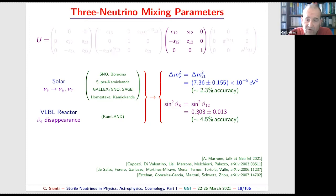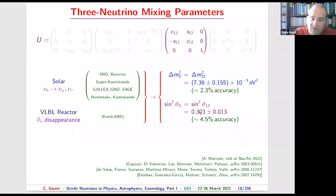The solar experiments also give information on the mixing angle θ₁₂, which is relatively large — not maximal (45 degrees would give sin²θ = 0.5), but comparable to maximal mixing. This is very different from the quark sector, where mixing angles are very small.